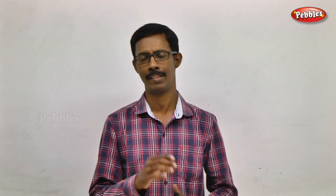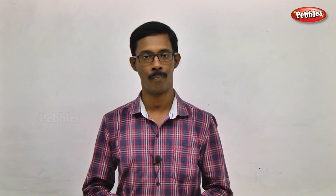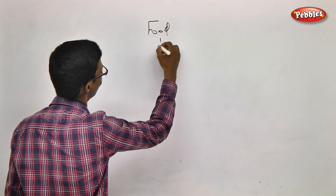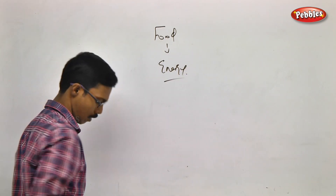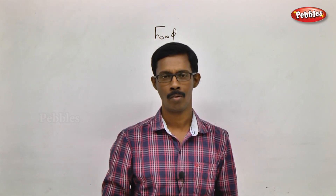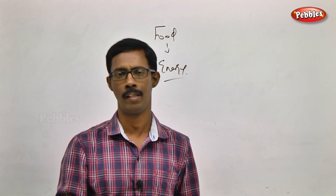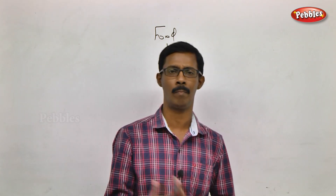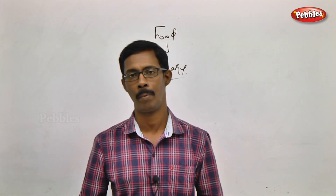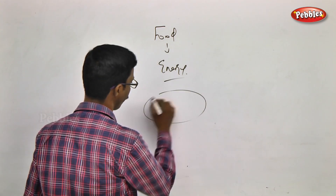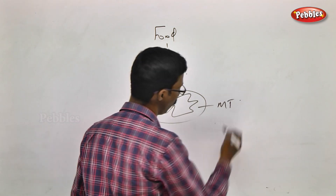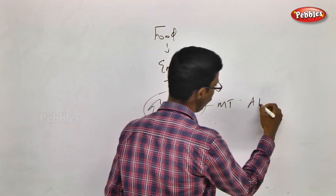What do we eat? Why do we have to eat? What do we get from food? We are getting energy — we eat to produce and provide energy. The energy-producing area is cellular. There is an organelle called mitochondria, and the mitochondria structure is going to produce energy in the form of ATP.